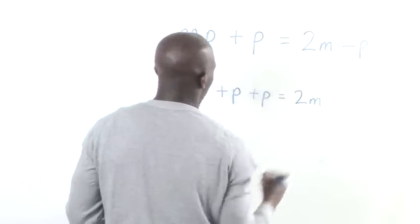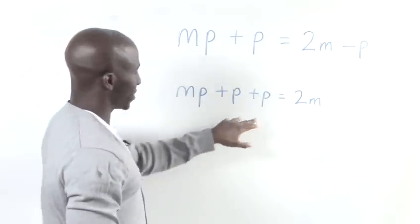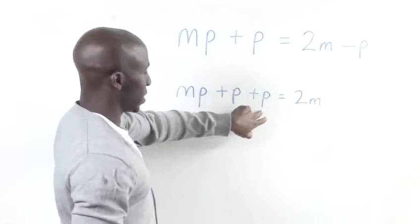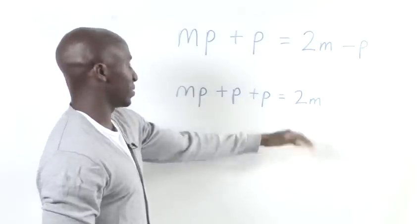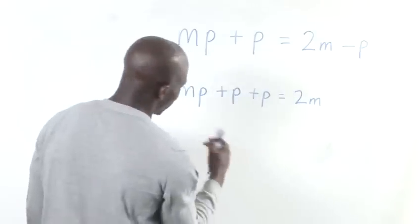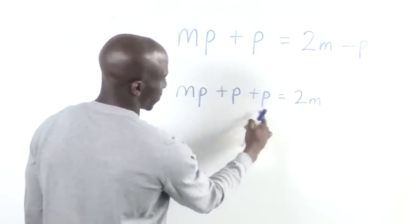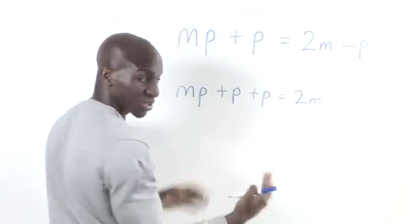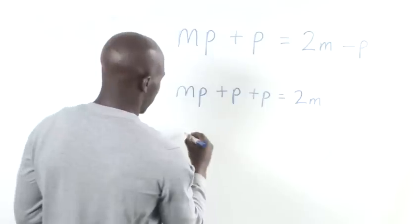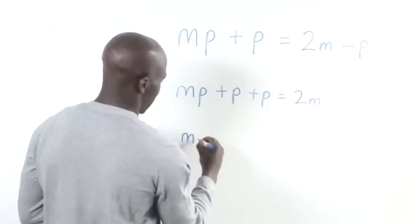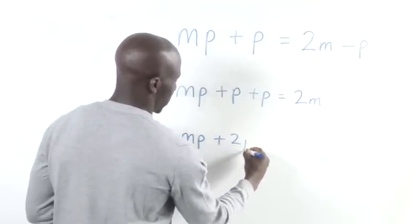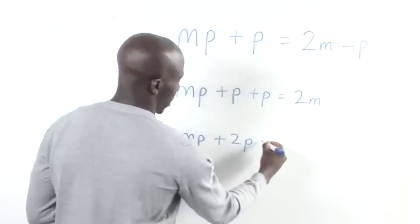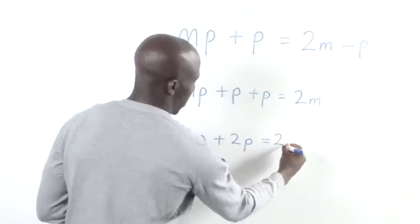So we keep that there and now what we want to do is simplify these P's and try to get this M alone so we can take it over to that side. Now, if we notice this, we've got two P's together, so we can bring that together. So we would have MP plus 2P, and that obviously equals 2M again.